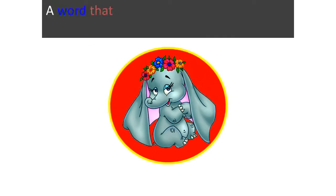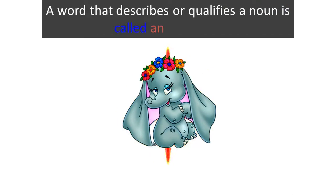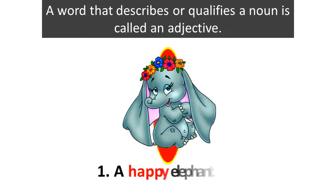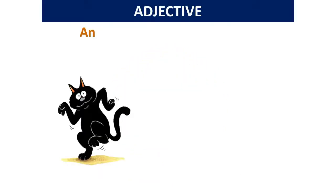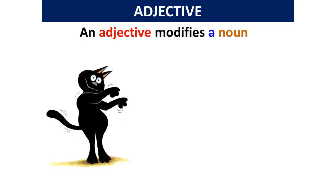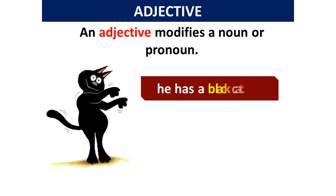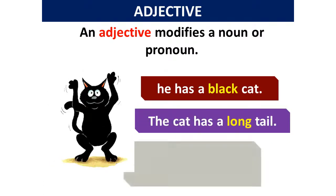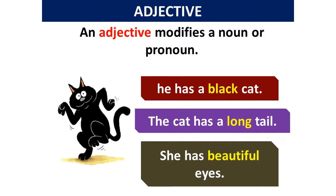A word that describes or qualifies a noun is called an adjective. For example, a happy elephant. An adjective modifies a noun or pronoun. He has a black cat. The cat has a long tail. She has beautiful eyes.